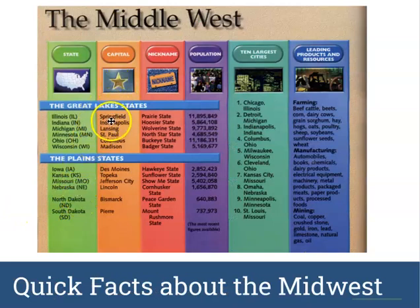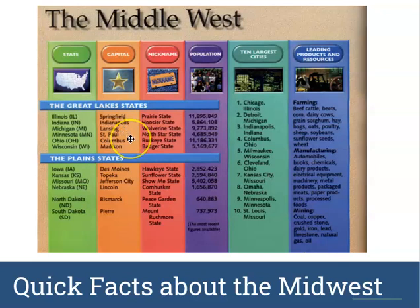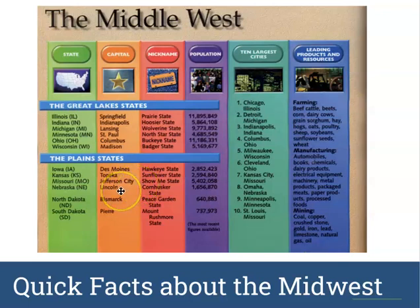This is a list of facts about each state. The capital of Illinois is Springfield. Indiana's capital is Indianapolis. Michigan's capital is Lansing. Minnesota's capital is St. Paul. Ohio's capital is Columbus. Wisconsin's capital is Madison. Iowa's capital is Des Moines. Kansas's capital is Topeka. Missouri's capital is Jefferson City. Nebraska's capital is Lincoln. North Dakota's capital is Bismarck. And South Dakota's capital is Pierre.